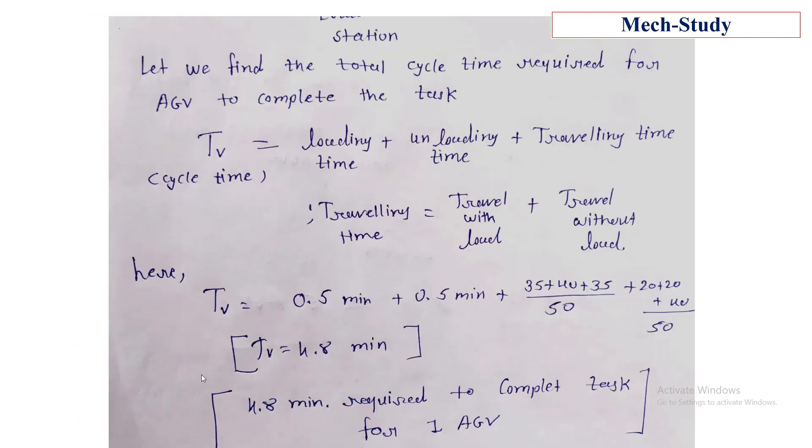Let me find the total cycle time required for an AGV to complete the task. Total cycle time is loading time plus unloading time plus traveling time. The loading time and unloading time given in the question are 0.5 and 0.5 minutes. Total traveling time is travel with load and travel without load.